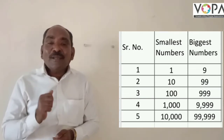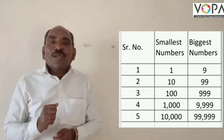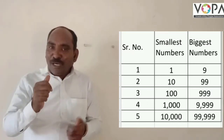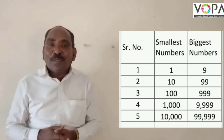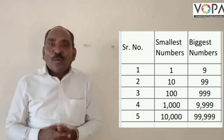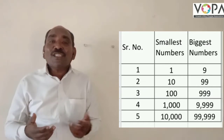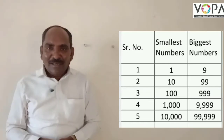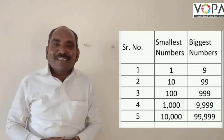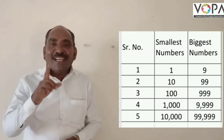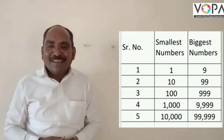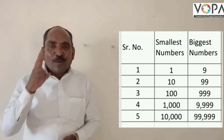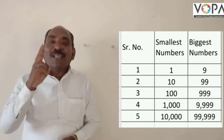Now tell me, what is the biggest 2-digit number? Yes, correct — 99. 99 is the biggest 2-digit number.